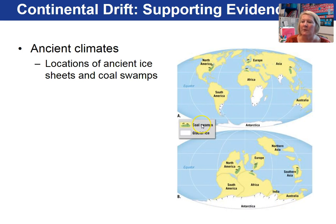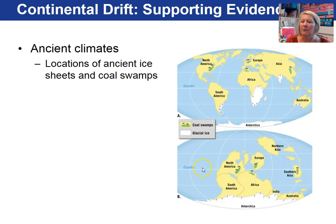More evidence: coal swamps. Coal swamps are located across the northern hemisphere, but 200 million years ago those continents were more along the equator, and these are the conditions and environment that would be needed in order to form coal.